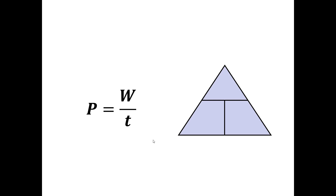You can also put power equals work divided by time into a magic equation triangle: put work in the top box and time in one of the bottom boxes, leaving the other bottom box for power. This lets you calculate any variable given the other two — for example, work equals power times time, and time equals work divided by power.